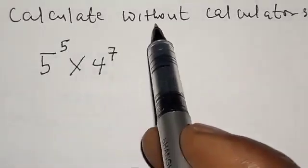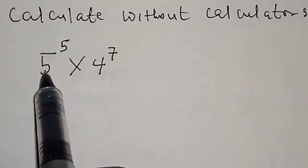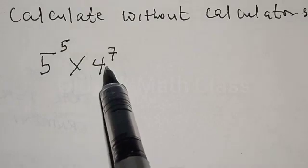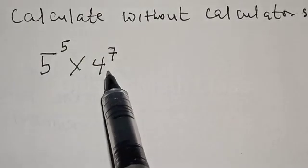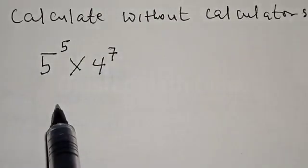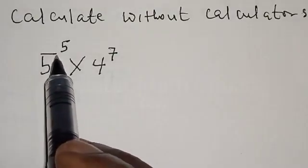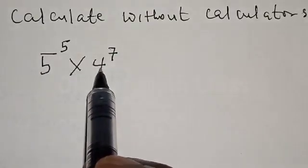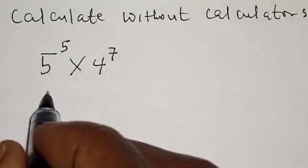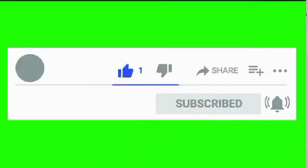Calculate without calculators: 5 raised to power 5 multiplied by 4 raised to power 7. Hi everyone, welcome to my class. In this class we want to look at how we can calculate 5 raised to power 5 multiplied by 4 raised to power 7 without using a calculator. But before we proceed, please don't forget to like, share, comment and subscribe.